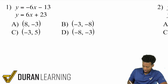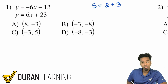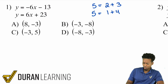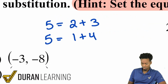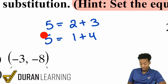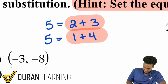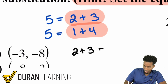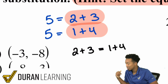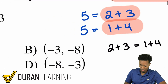Let me explain why this makes sense. Say five equals two plus three, and also five equals one plus four — both are true. Now, if five is the same thing as two plus three, and five is the same thing as one plus four, then isn't it true that two plus three and one plus four are equal to each other? Yes — that is going to be true.